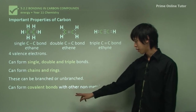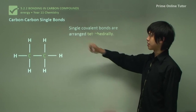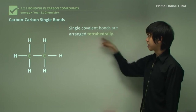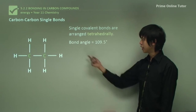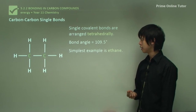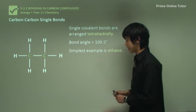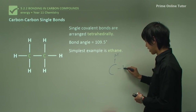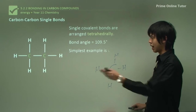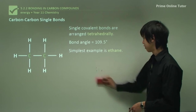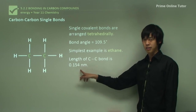Carbon can form covalent bonds with other non-metals. Carbon-to-carbon single covalent bonds are arranged tetrahedrally due to VSEPR theory, giving a bond angle of about 109.5 degrees. The simplest example of a carbon-to-carbon single bond is ethane — the simplest carbon compound overall being methane, which has only single bonds — and the bond length of a carbon-to-carbon single bond is about 0.154 nanometers.